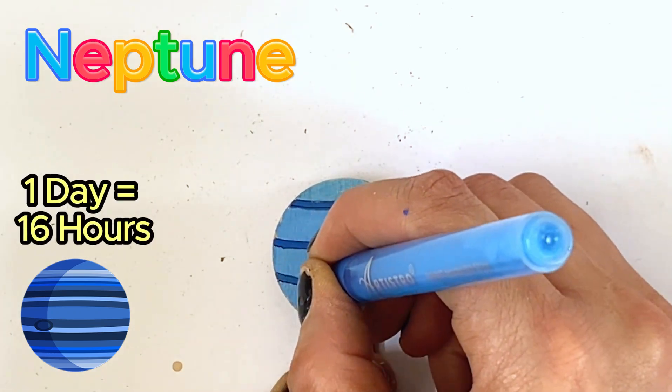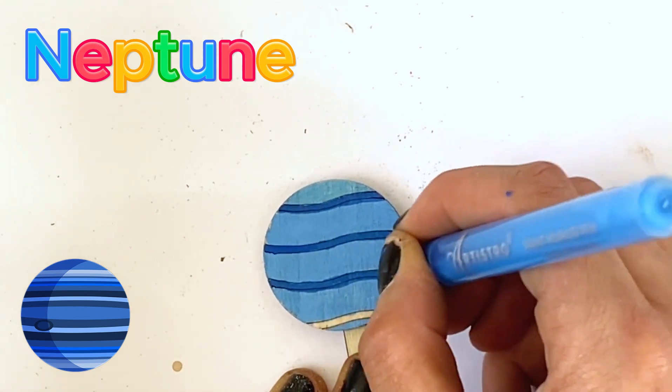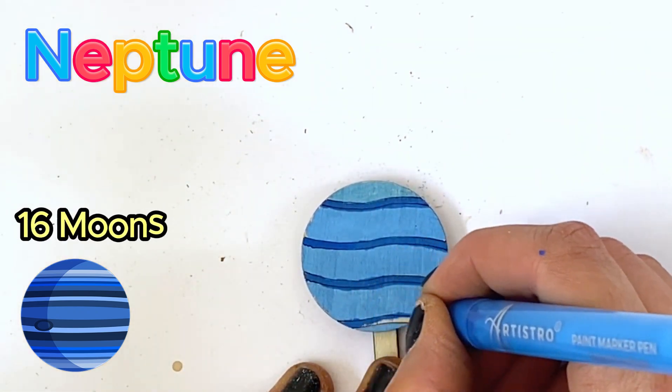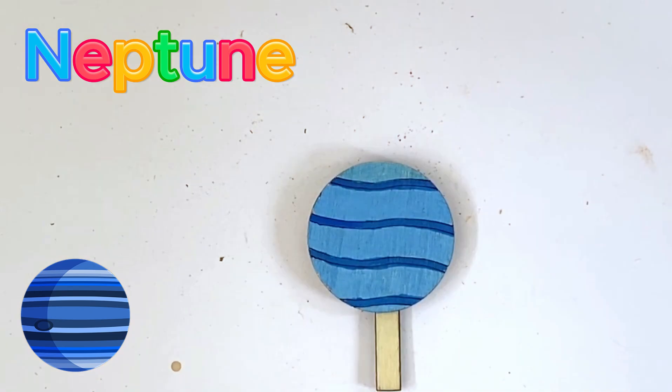One day on Neptune would be approximately 16 Earth hours. And lastly, Neptune has 16 official moons. And here is our finished Neptune.